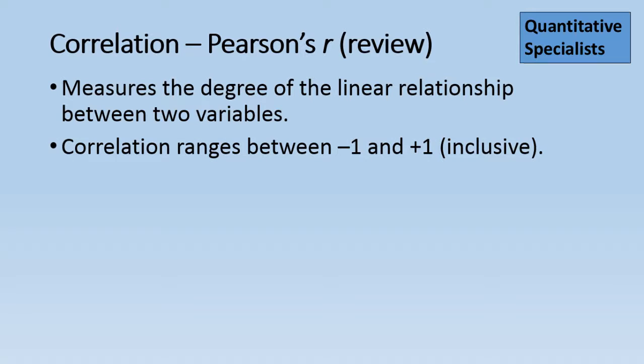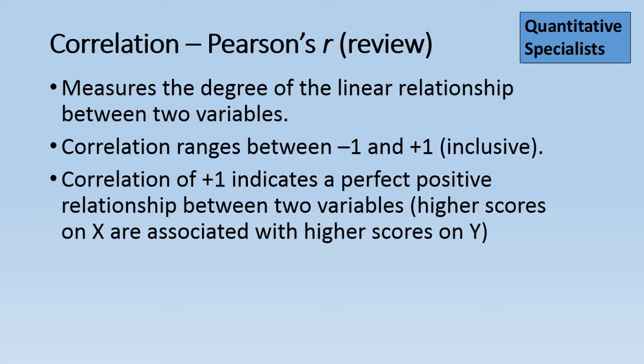Correlation ranges between negative 1 and positive 1. A correlation of positive 1 indicates a perfect positive relationship between two variables. Another way to think about this is higher scores on X are associated with higher scores on Y, if we think of X and Y as our two variables.